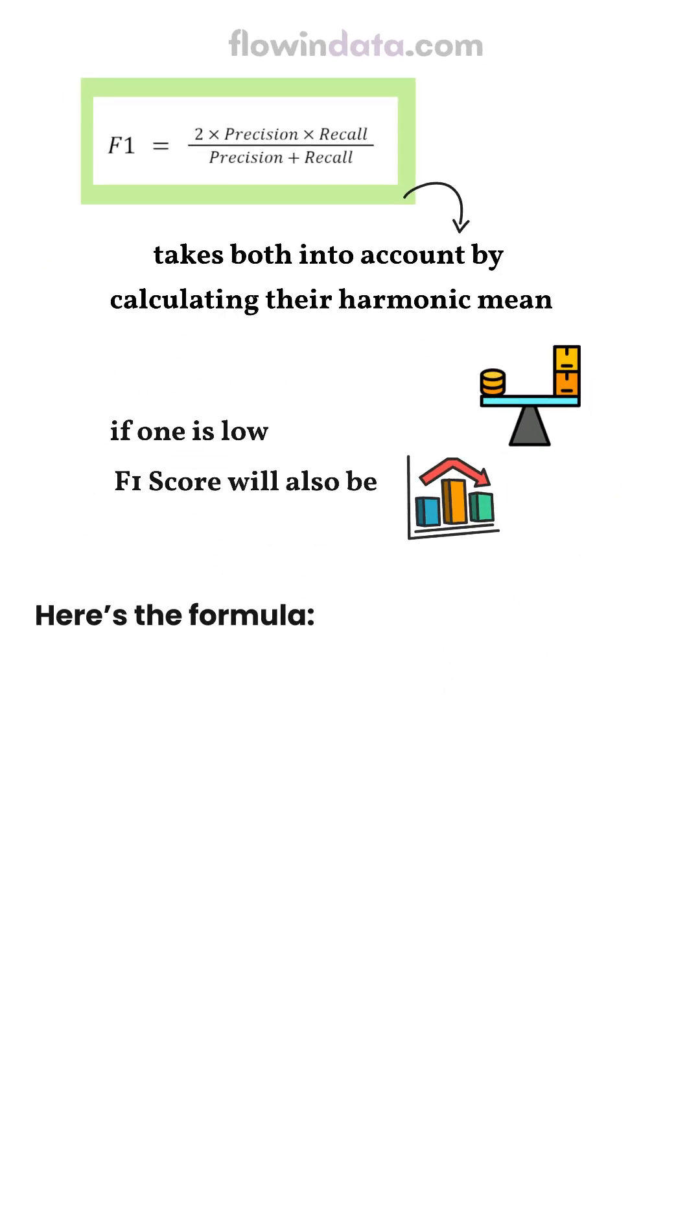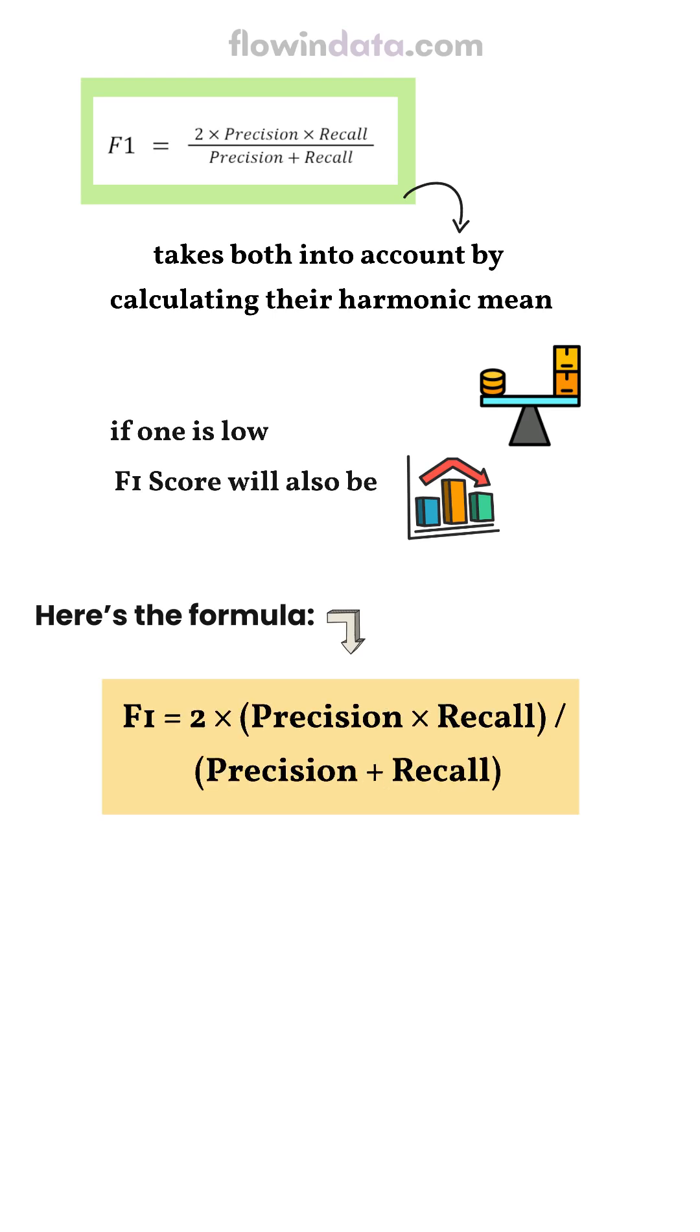So, here is the formula. F1 equals 2 times precision times recall divided by precision plus recall.